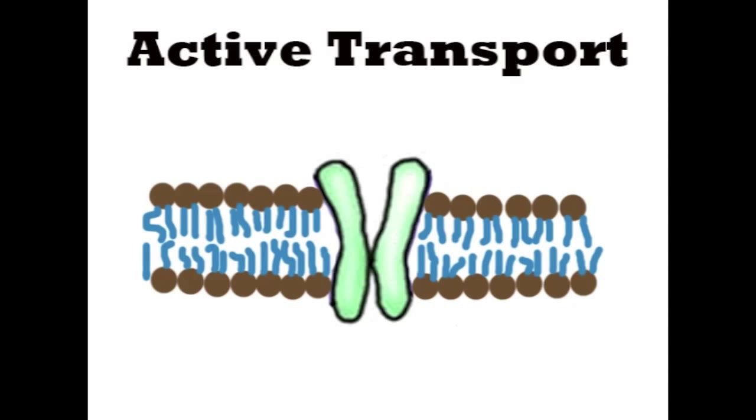During active transport, cells must capture nutrients in low supply and transport them into the cell where there is a higher concentration. This requires a transport protein and also energy because it is moving against the concentration gradient.